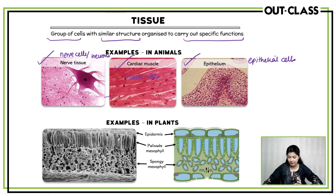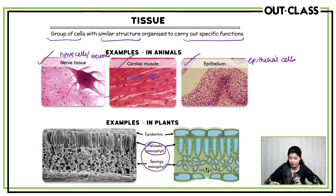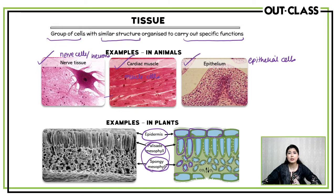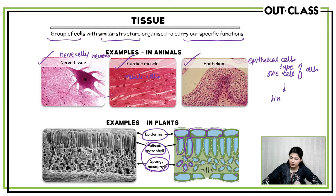In plants, you have mesophyll tissue. These are all different tissues, again each with one type of cell. These are epidermal cells which make the epidermis. These are palisade mesophyll cells which make palisade mesophyll tissue. And these are spongy mesophyll cells which make spongy mesophyll tissue. What you need to know is that one type of cell combines together to form a tissue, and these groups of similar cells carry out specific functions.